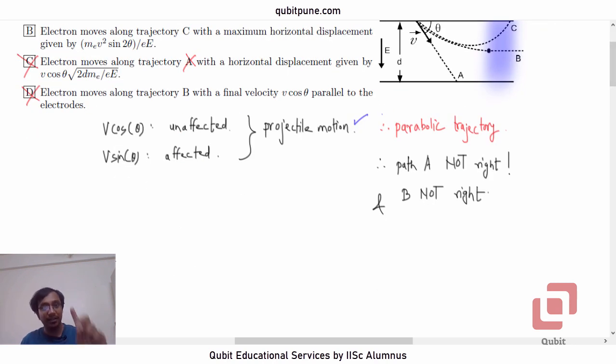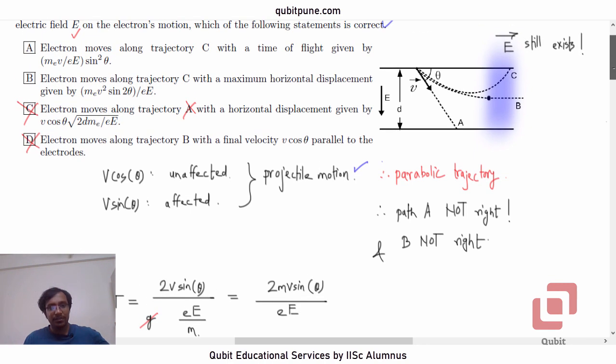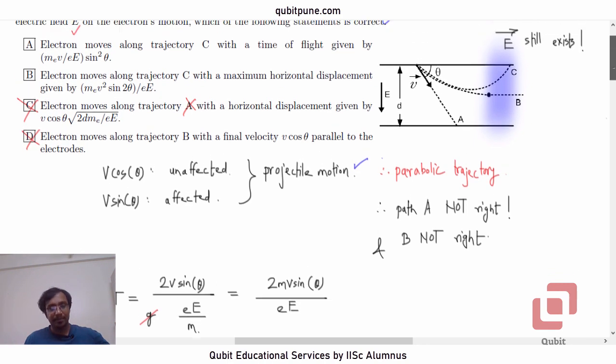Now, what is the time of flight for a projectile motion under gravity? The time of flight is 2V sin theta by G. But here, we cannot write G because the electron is not under acceleration due to gravity. So, what should we write? We should write the acceleration of the electron. What is the force? The force is E E, field into charge upon M. So, the time of flight is going to be 2MV sin theta by E E. So, that is not there. 2 is not there. Sin squared, it is there and V of sin theta. So, option A is not right. That is not right.